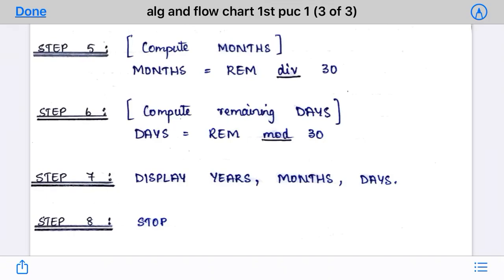Step 7: display year, months, and days. For 365 days, year is 1, month is 0, and days is 0 — and that will be displayed on the screen. The last step is Stop. This is the complete algorithm for converting days into years, months, and days.